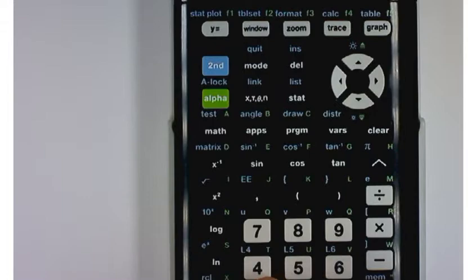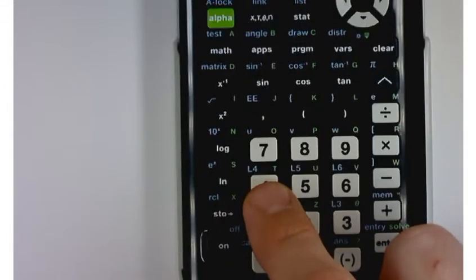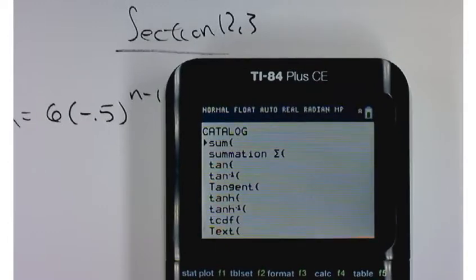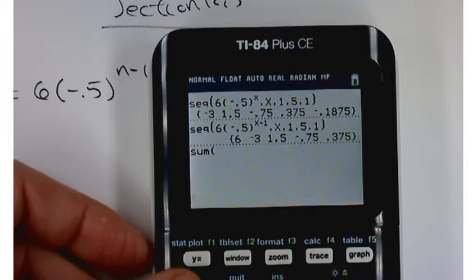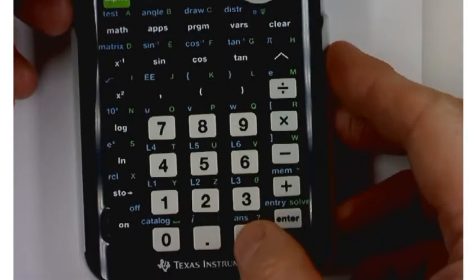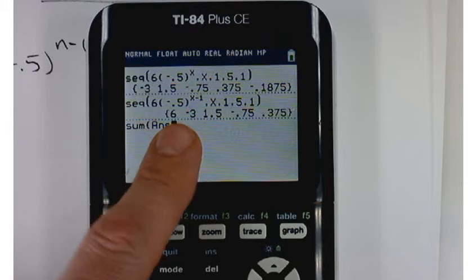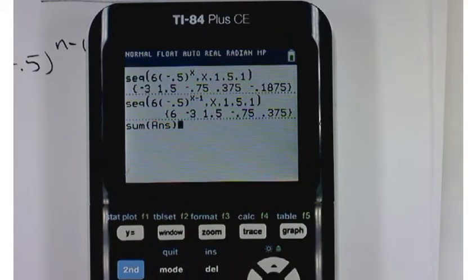And then we'll press the number four because right above there is a T. And let's scroll up. I don't want summation. I want the sum. And I'll take the sum of my previous answer. So second and then the opposite key down there, the sum of the previous answer. Well, the previous answer is that list. And if you sum up the previous answer, you get the sum of those five terms. Cool.